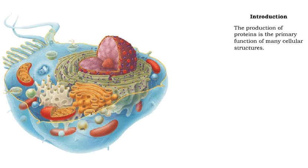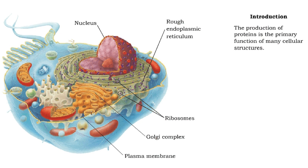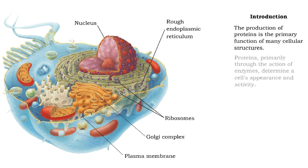The production of proteins, important in maintaining homeostasis, is the primary function of many cellular structures. Proteins primarily through the action of enzymes determine a cell's appearance and activity.